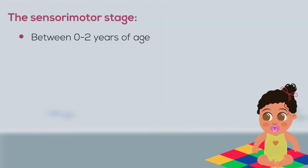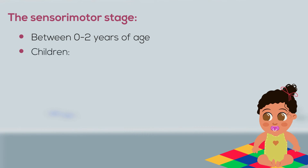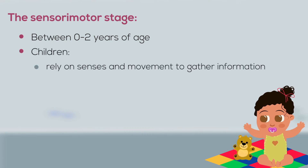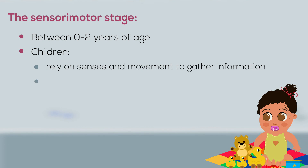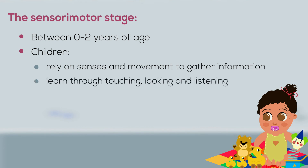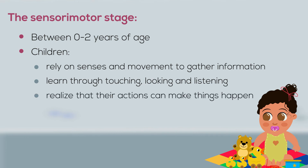The sensorimotor stage, between zero to two years of age, is when children rely on senses and movement to gather information about the world around them. They learn through touching, looking, and listening. They realize that their actions can make things happen in the world around them.